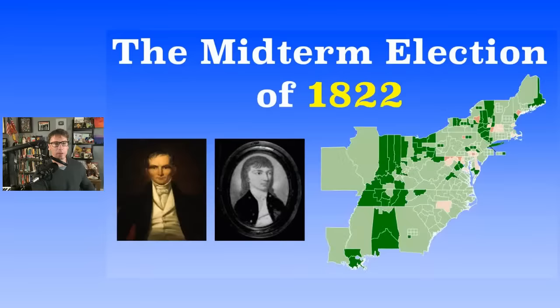Next up, we've got the midterm election of 1822. Remember that 1820 was another unusual presidential election — James Monroe didn't really have much of an opponent; he pretty much ran unopposed. 1820 was a watershed year where the Federalists had mostly given up by that point.